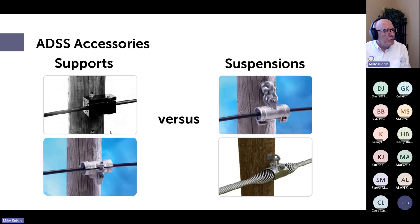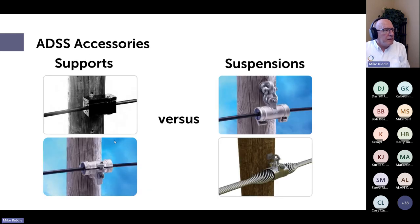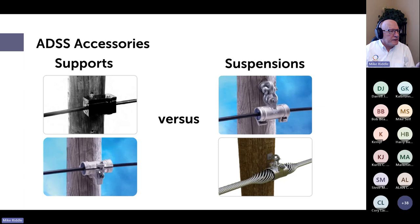One popular idea is to remove the inserts from a support and pull the cable through it like a stringing block — I don't like that for ADSS. I would just use a distribution class stringing block instead. Even a simple distribution block with a small roller still drags the cable less than pulling it through the entire length of a support. Please check with the cable manufacturer before doing this.